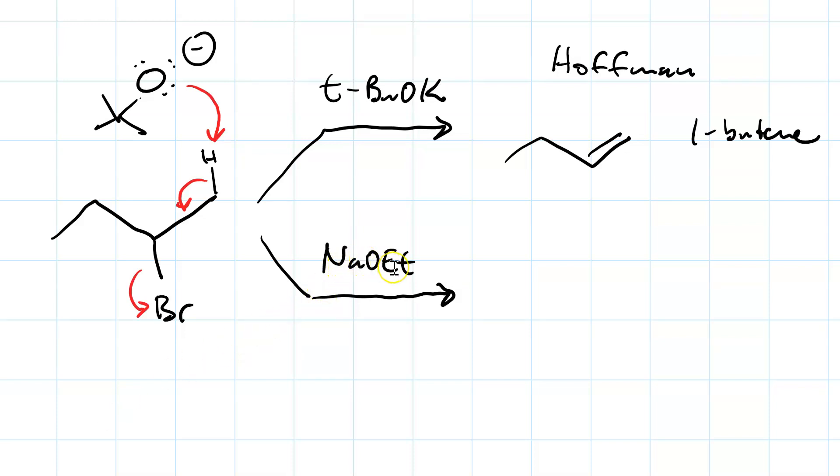if I use sodium ethoxide, well, sodium ethoxide is not bulky, that'll give me the Zaitsev product, 2-butene. The reason for that is